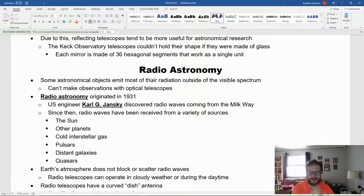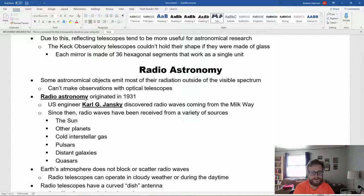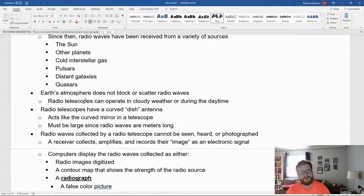We have other types of astronomy as well. Radio astronomy originated in 1931 with U.S. engineer Karl Jansky. He discovered radio waves coming from the Milky Way and started observing the rest of the universe with radio waves. Radio waves have been received from tons of sources: the sun, other planets, cold interstellar gas, pulsars, galaxies, and quasars.